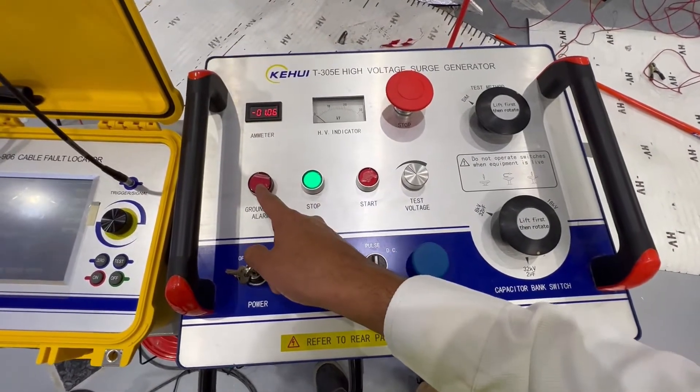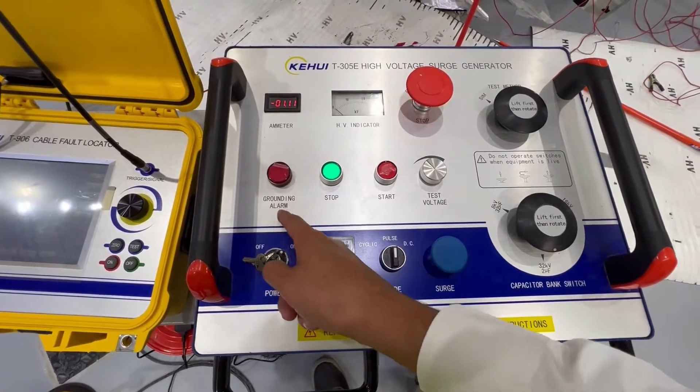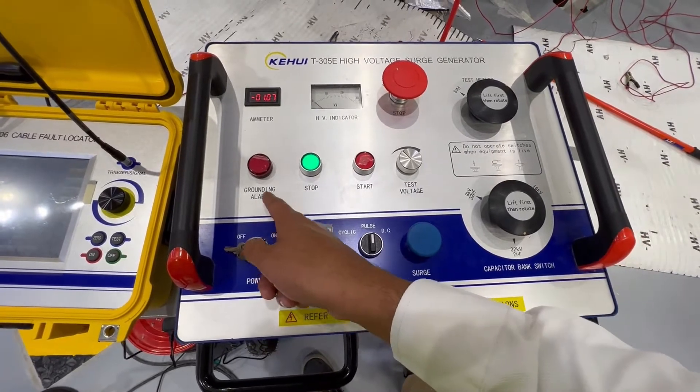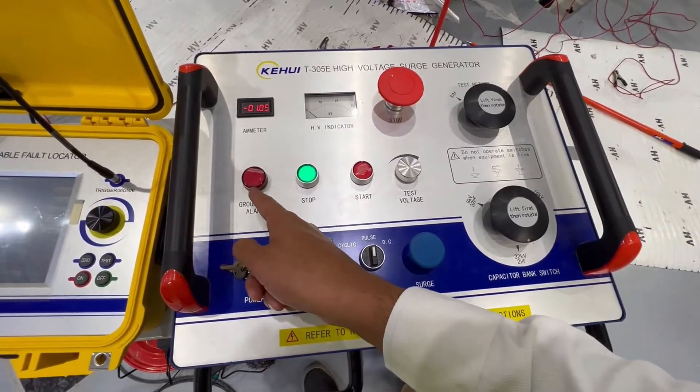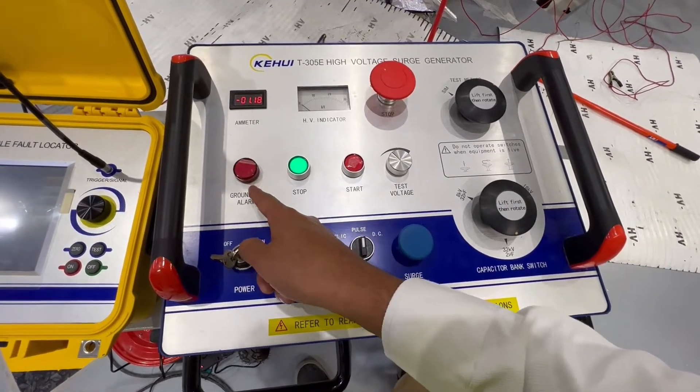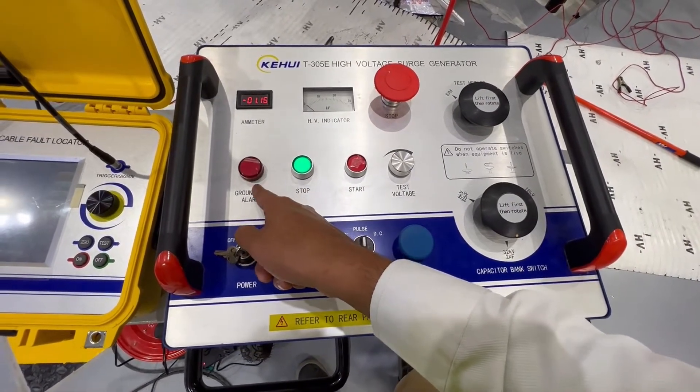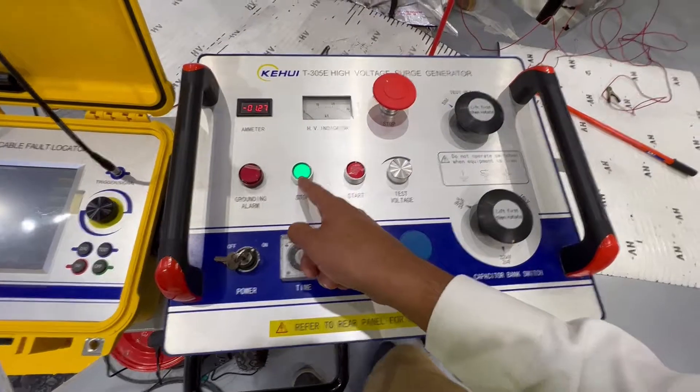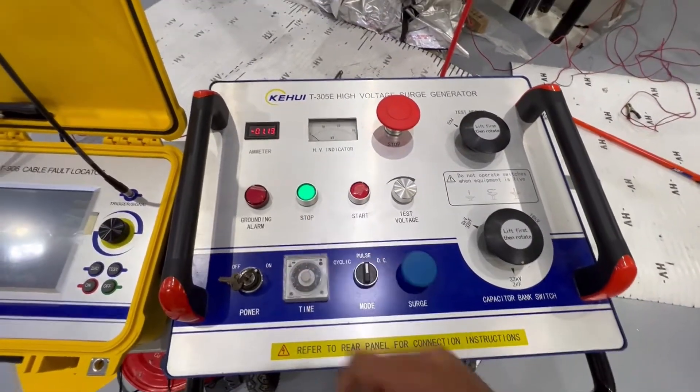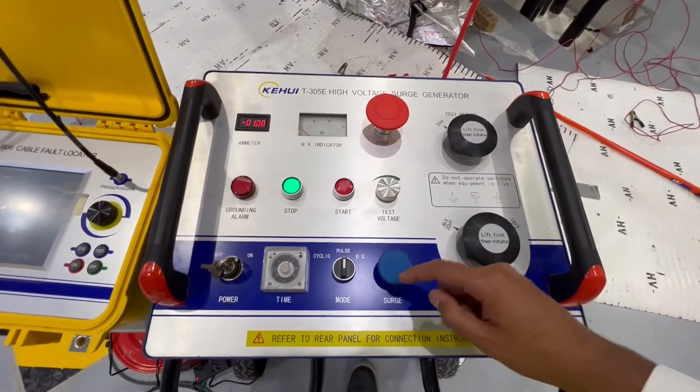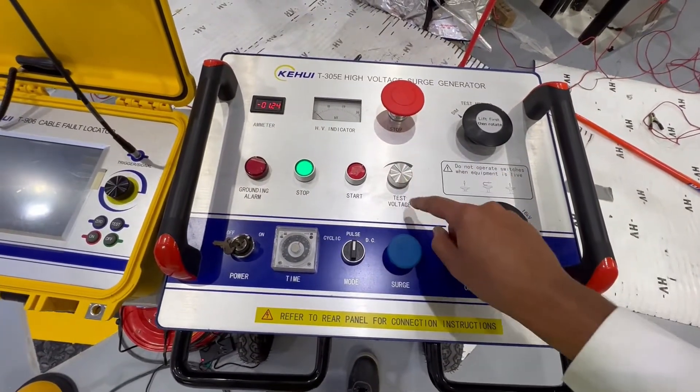If there is improper grounding, this red indication grounding alarm will pop up and helps the end user to see that the grounding is not proper. Once this light is off and the green LED comes up, it means the equipment is ready for testing.